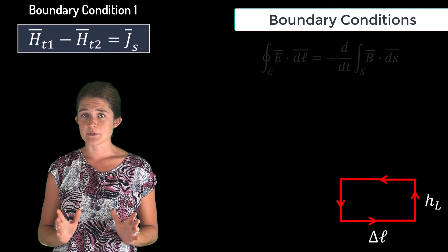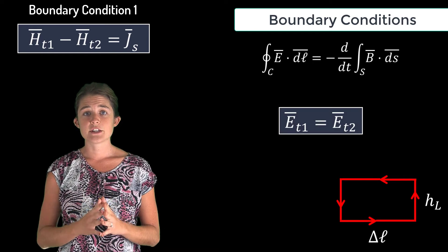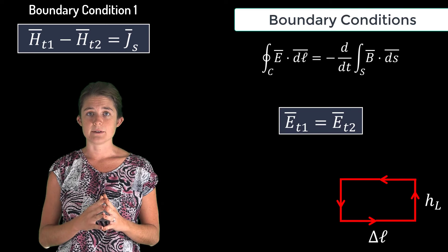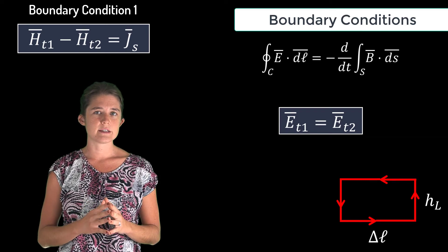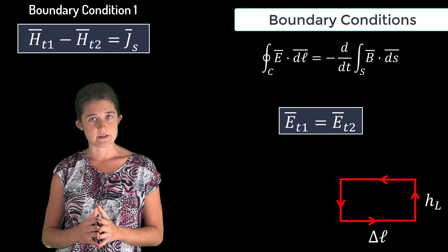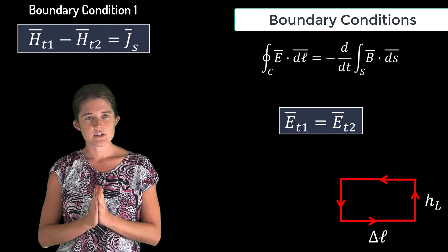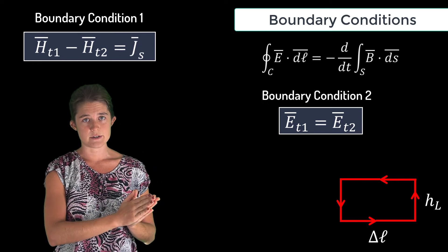We can perform a similar integration around the same loop using Faraday's law to show that the tangential electric field in the first region is equal to the tangential electric field in the second region. This is the second boundary condition.